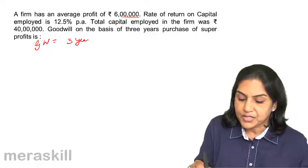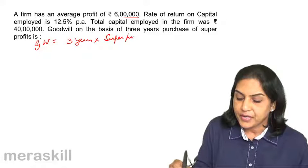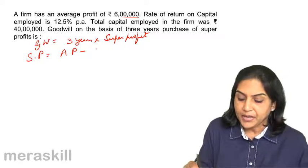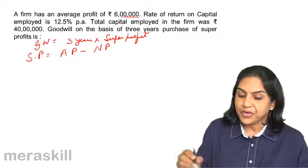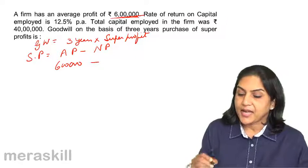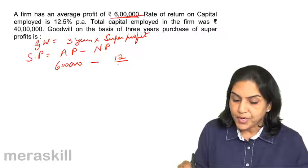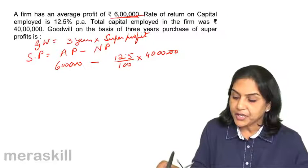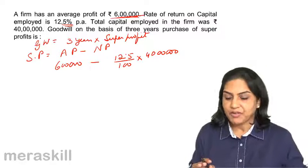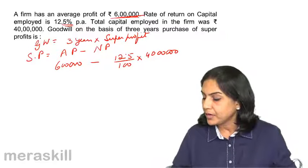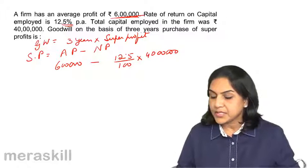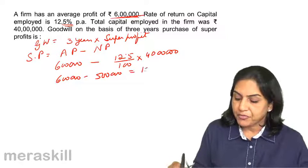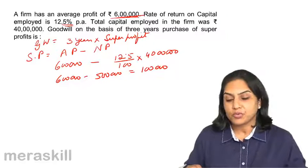Goodwill is 3 years purchase into super profit. Now, what is super profit? Super profit is equal to actual profit minus normal profit. The average profit being made is 6 lakhs, minus the normal profit, which is 12.5% of the capital employed of 40 lakhs — that is 5 lakhs. Therefore, 6 lakhs minus 5 lakhs: super profit is equal to 1 lakh.